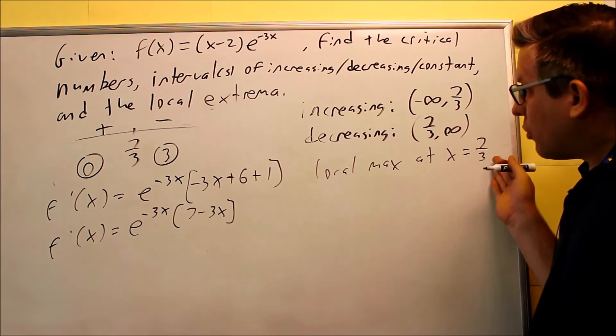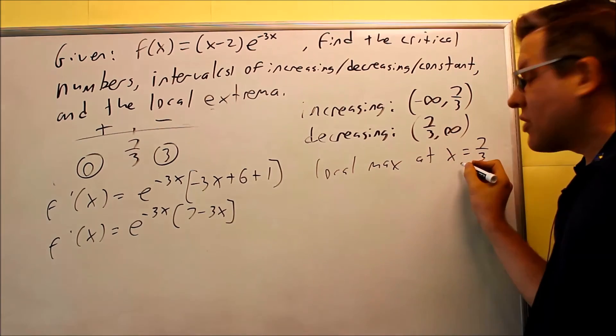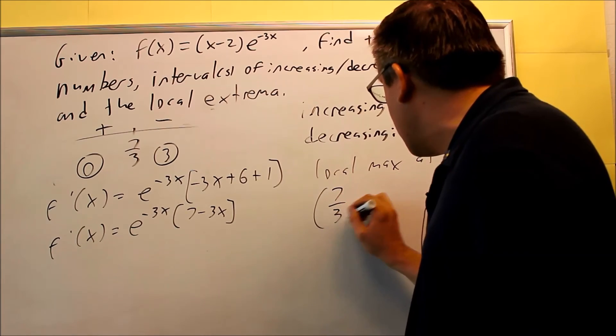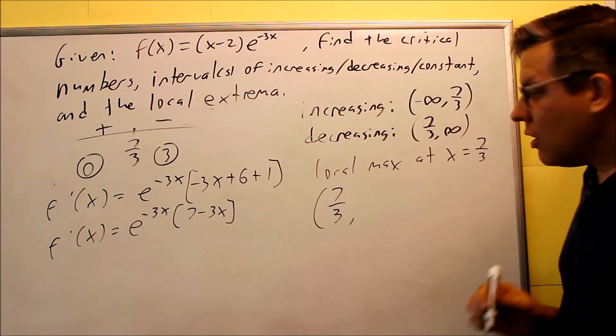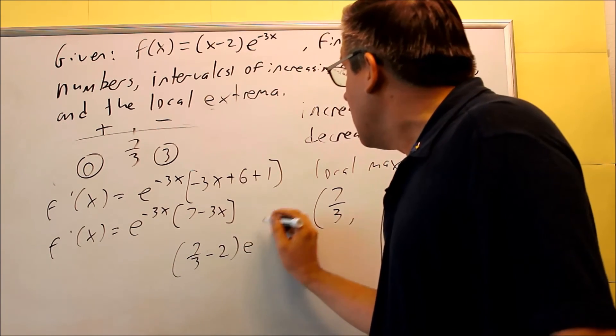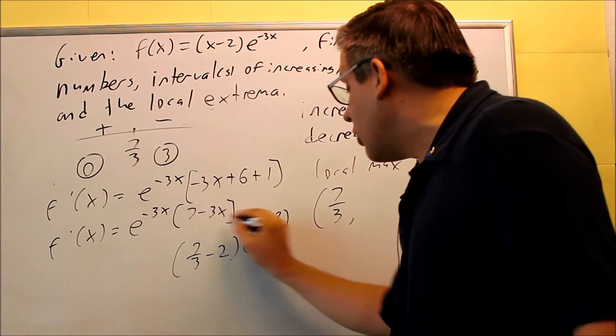Now that we have this, we have to put 7 thirds back in and find the actual coordinates. So local max occurs at x equals 7 thirds, but we want to actually write the coordinate for this. So we're going to do 7 thirds and we're going to put 7 thirds back into the original one. Let's do that. 7 thirds minus 2 and e to negative 3 times 7 thirds.